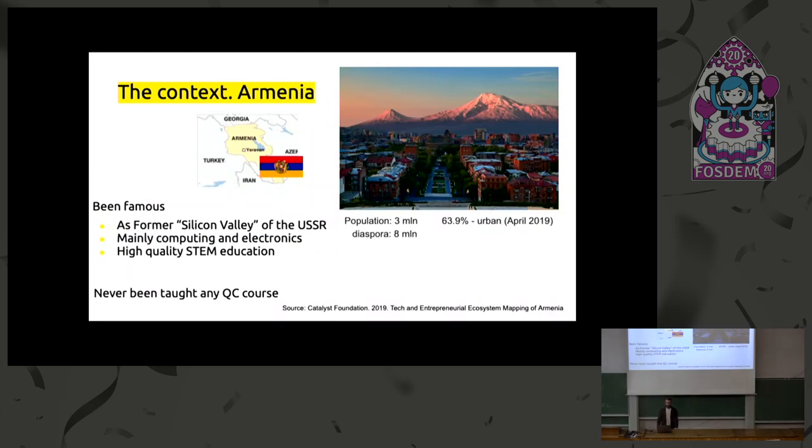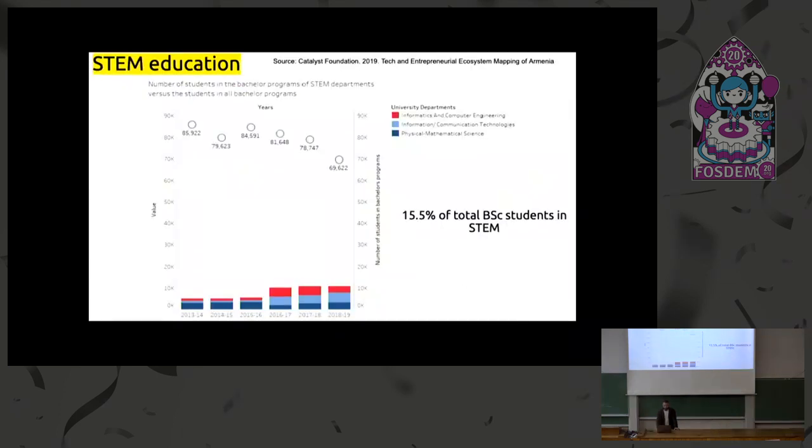So Armenia is a very small country, population three million, and diaspora is eight million. And it's been famous in the Soviet Union as a Silicon Valley of Soviet Union. But as you know, the Soviet Union was closed and nobody outside of that didn't know what was happening inside Soviet Union. And mainly was good at computing and electronics and high quality STEM education.